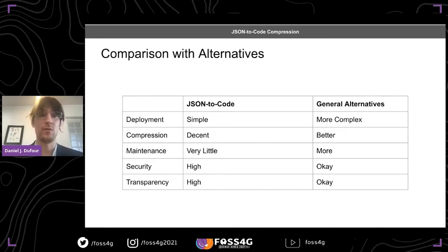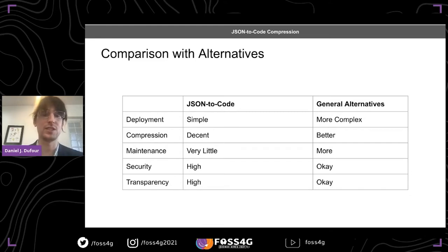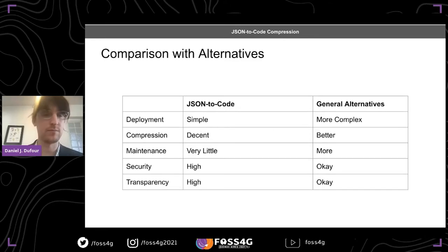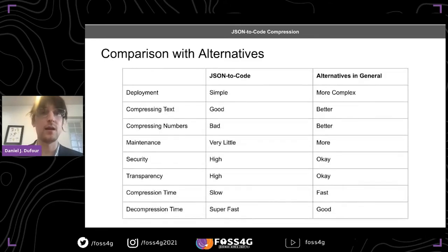It's much harder to run dynamic or static scanning on binary data. We've seen examples of people inserting malicious Bitcoin wallet-stealing code as binary data into GitHub repositories, which is hard for security scanners to detect. With JSON to code, because it's just code, you have full transparency into what's happening.